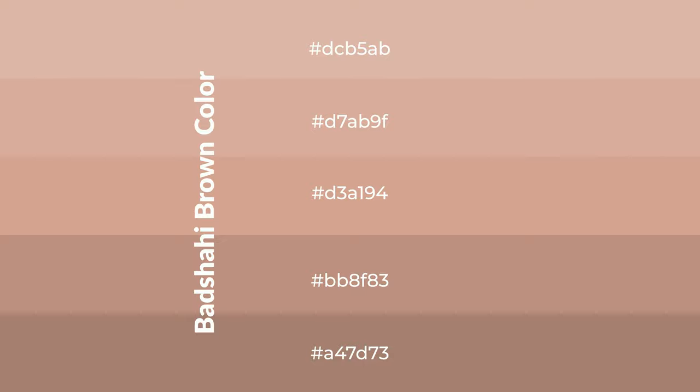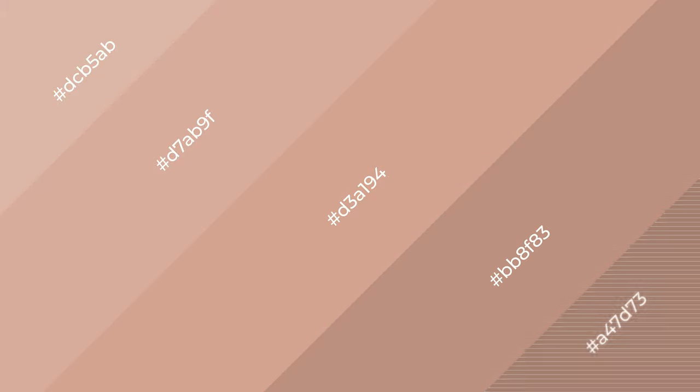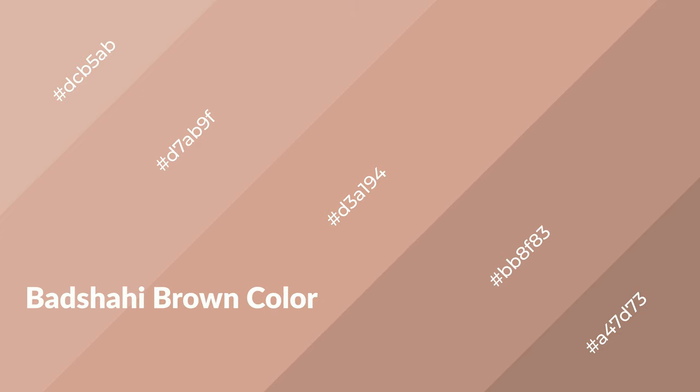To generate shades of a color, we add black to the color, and it is used in patterns and 3D effects. Layers and shades create depth and drama. Bud shahi brown is a warm color and it emits cozier and active emotions.